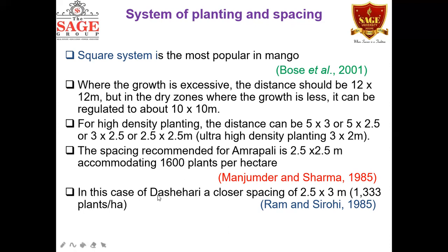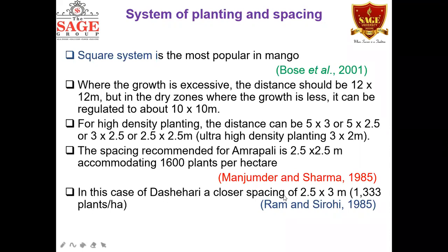Another experiment was conducted with the variety Desheri at the University of Agriculture and Technology, Pantanagar. With spacing of 2.5 into 3 meters, accommodating 1,333 plants per hectare, they also got very good yield compared to the traditional method. Different pruning techniques such as dehorning, de-shooting, and tipping were used to maintain the canopy of plants.